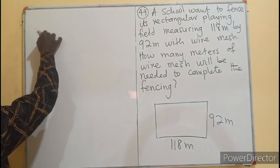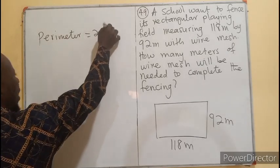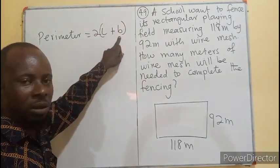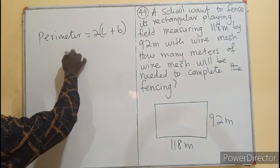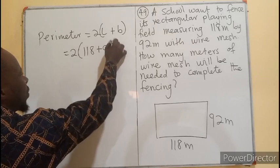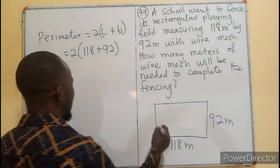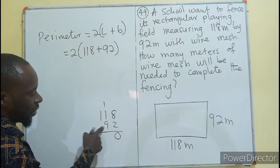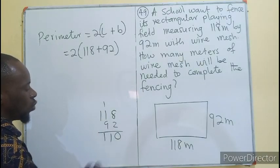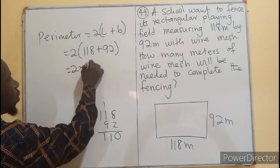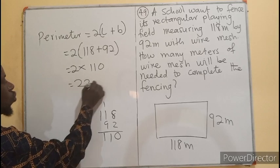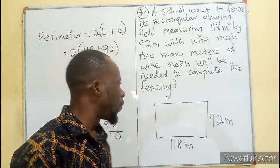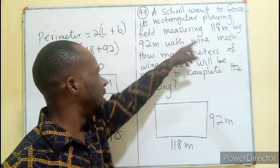So we know perimeter of a rectangle is 2L plus B. Let me just factorize it. It's going to be 2 times L plus B. So in this case, 2 times 118 plus 92. Let's do the calculation. 118 plus 92, 0 plus 10 will be 11. Then this is going to be 1, right? So I'll be having 2 times 210 which will be 420 meters. We need 420 meters of wire mesh to be able to fence the rectangular playing field which has these dimensions.